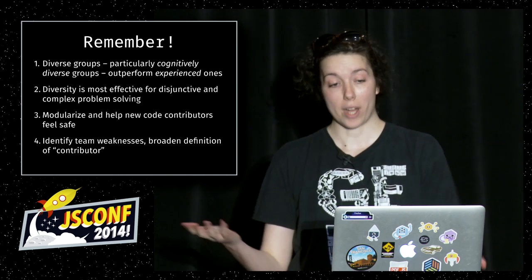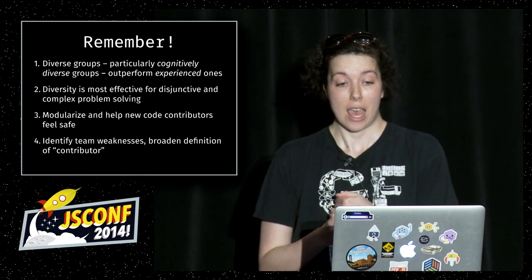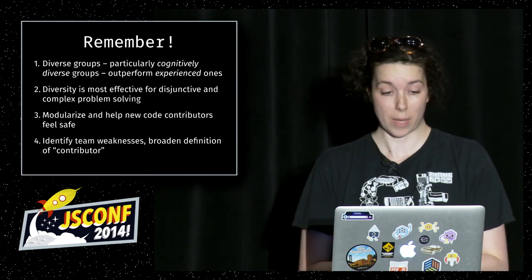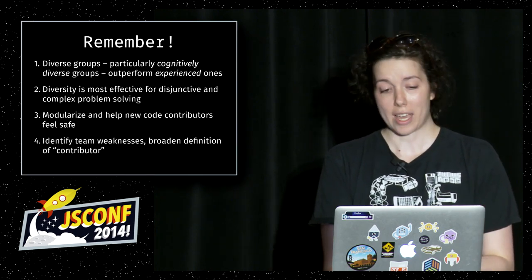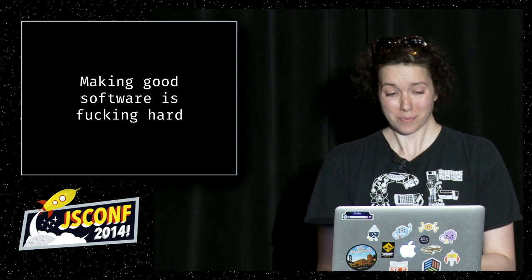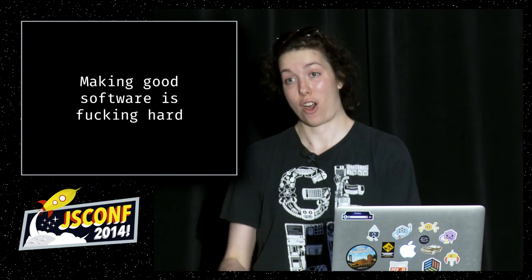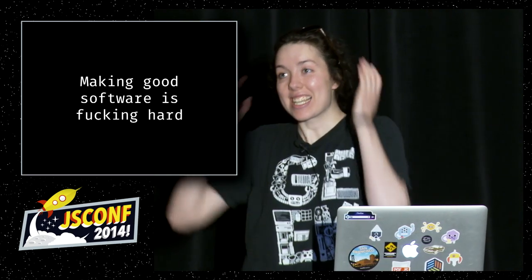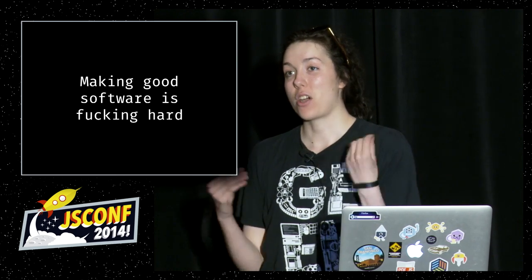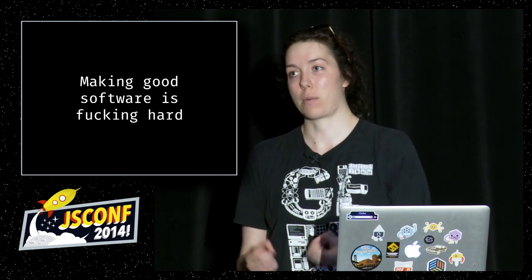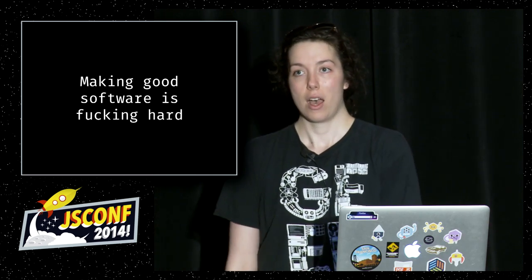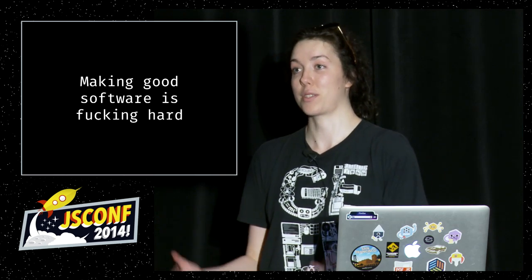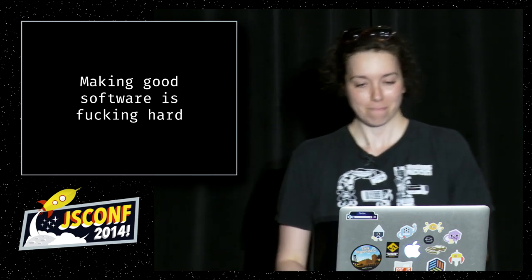So now you know a little bit more about what cognitive diversity is and how you can use it when you don't know how to take advantage of certain things in your code base. If there's one thing I want you to take away from this talk, it's this: making good software is really hard, and it's going to be even harder for the open source community to deliver really great products in the future. We can't afford not to take advantage of this awesome thing that is cognitive diversity. So let's go make it work. Thank you.